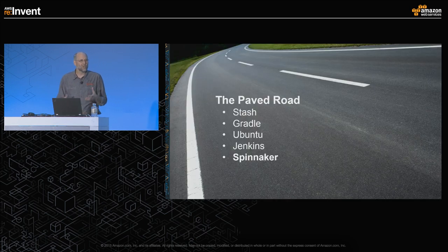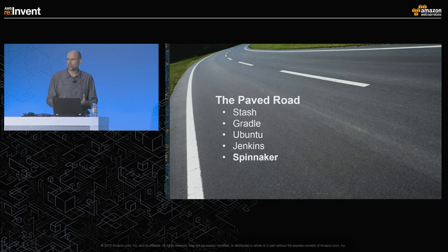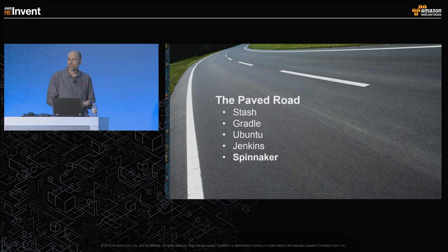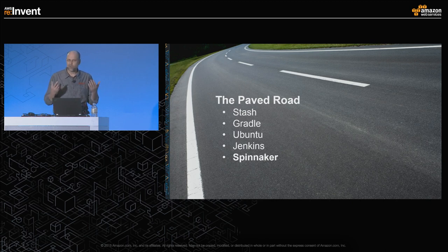It's important to note that Spinnaker is part of a larger strategy we call the paved road — best-of-breed technologies we've chosen to support so our customers don't have to figure it out on their own. We use Stash for source control, Gradle for builds — we've seen dramatic improvements in build times — Ubuntu for our Linux distribution with kernel tunings for better performance, Jenkins for continuous integration, and Spinnaker wraps around all of that as our orchestration engine for delivery.